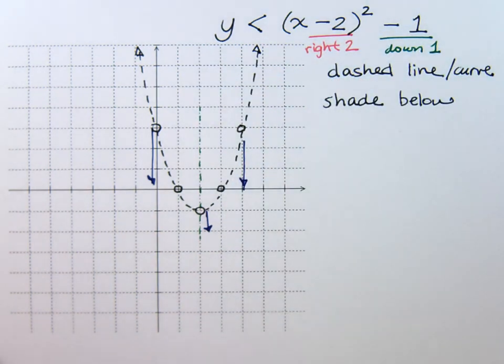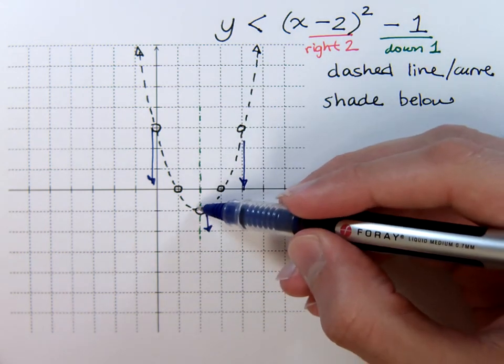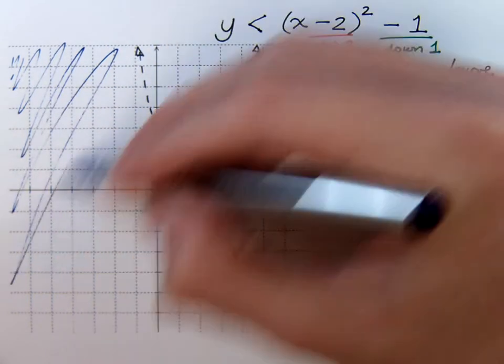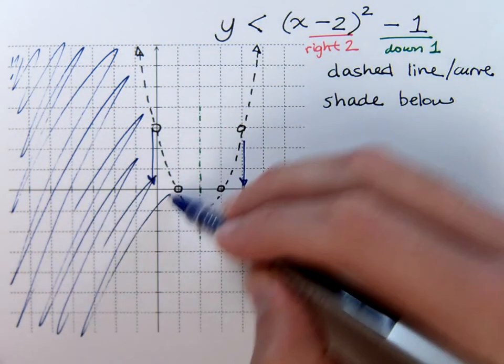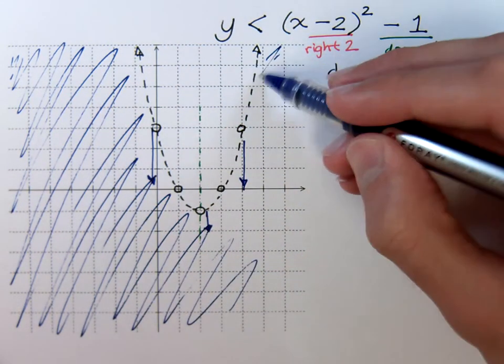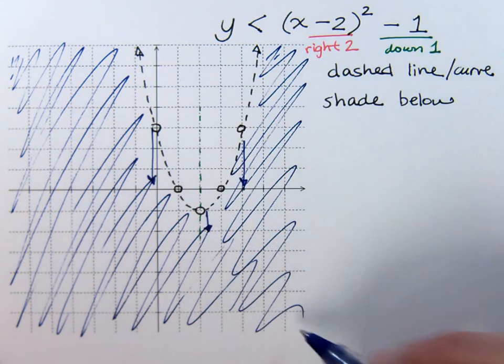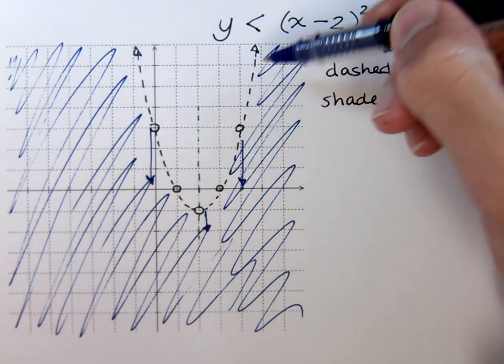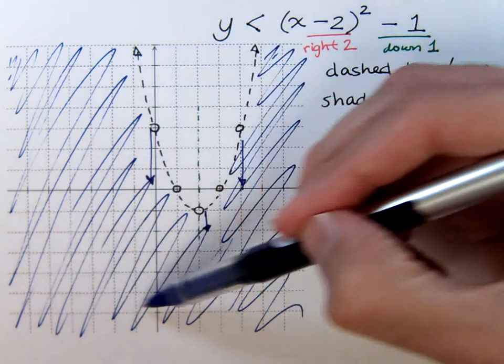Now, it happens to be on the outside because that's what happens to be below this parabola. So, all of this will be my solution set. Nothing inside here and nothing on the parabola, but just everything on the outside.